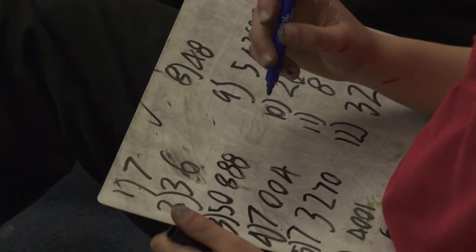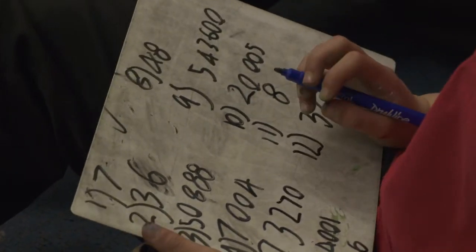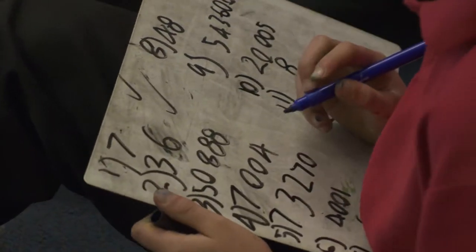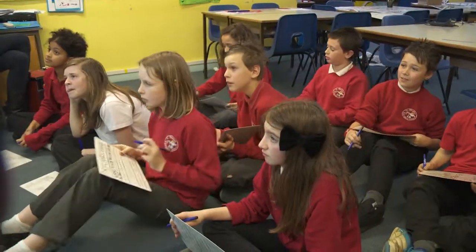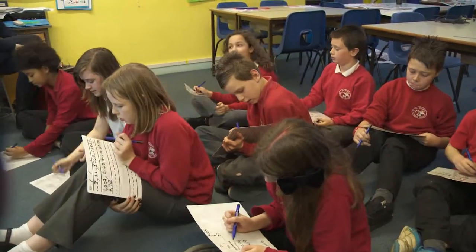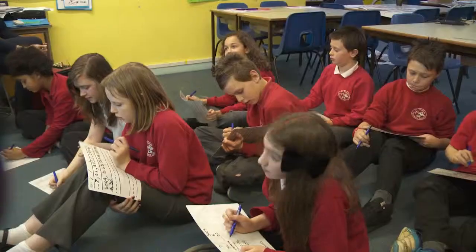Question two, who can tell me what they got? Question two, Maddy. 36. 36. Let's have a look. 12 times 3, 36. You all get that? Yeah, I thought you would, you know all your times tables.